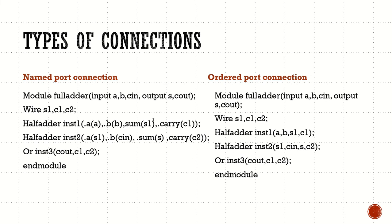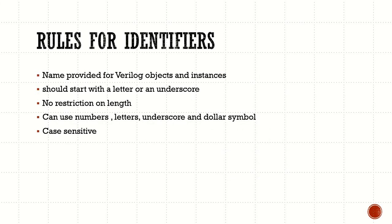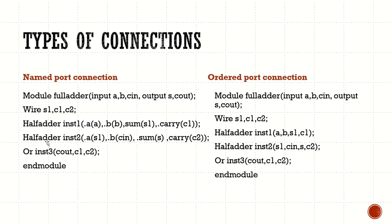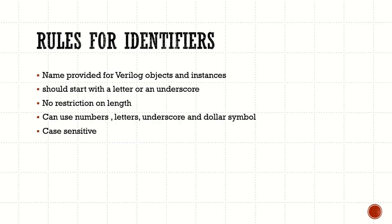What are the rules for identifiers? Identifiers are the names we provide for Verilog objects and instances — for example, the instance name we give is an identifier. The first rule is that an identifier must start with a letter or an underscore. It should not start with a number or any other symbol. There is no restriction on the length of the identifier.